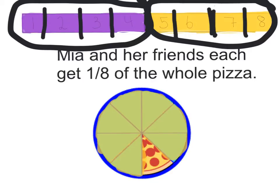And then I counted how many sections there were: one, two, three, four, five, six, seven, eight. That means that one of these is equal to one out of eight, or one eighth of a pizza.